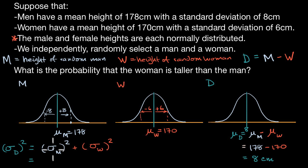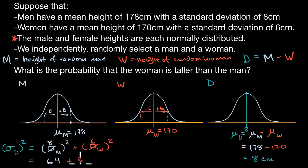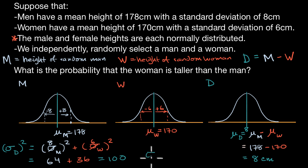The standard deviation of M is eight, so eight squared is 64. The standard deviation of W is six, so six squared is 36. Adding these together gives a variance of 100. Therefore, the standard deviation of D is the square root of 100, which equals 10.